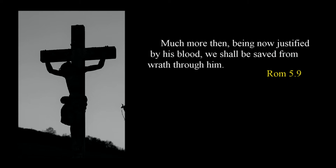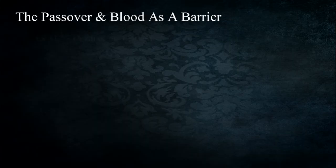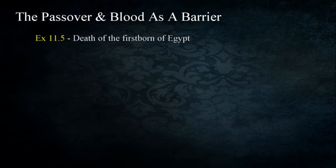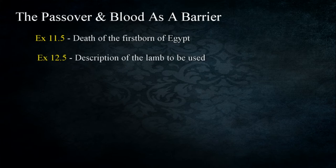Paul states: 'Much more than being now justified by his blood, we shall be saved from wrath through him' in Romans 5:9. The ultimate purpose of God was to redeem man from the fear of death and an eternity of separation from him. The blood of Christ is the barrier that provides that protection. In the Old Testament, the story of the Passover displays God's power and his use of blood as a barrier that saves. The final plague God brought on the Egyptians was the death of the firstborn in Exodus 11:5. The lamb to be used was to be 'without blemish, a male of the first year' from the sheep or from the goats in Exodus 12:5.